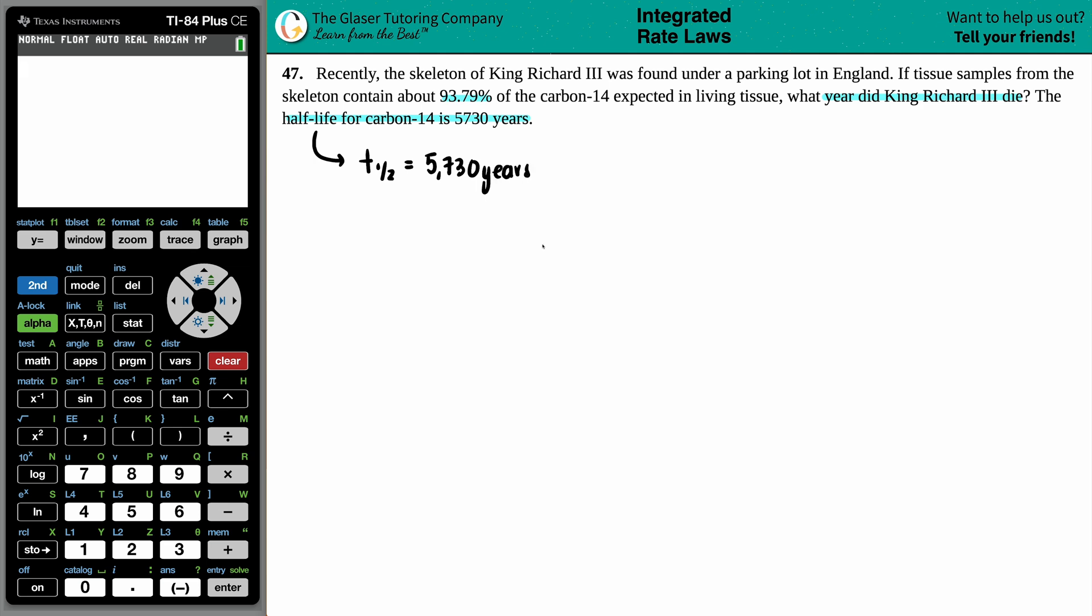Now, there's three different rate laws that we need to know as far as formulas, right? There's zero-order kinetics, first-order, and second-order. But in order to tackle this question, we first have to find out what order does carbon-14 decay at? And, you know, if the question was nice, it would say it explicitly somewhere in here that, hey, we're undergoing first or second or zero-order kinetics. But nothing like that in this question. So how are we going to find out?